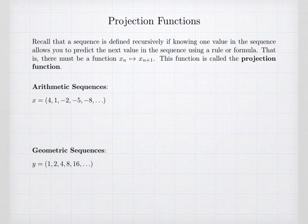So there's a function that takes a sequence value as its input, and the output of that function is the next value of the sequence — that function is called the projection function. For our arithmetic sequence, the next value x_{n+1} is the current value x_n minus 3 each time.